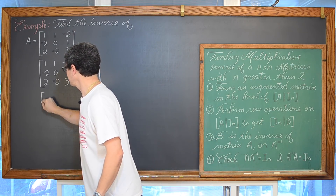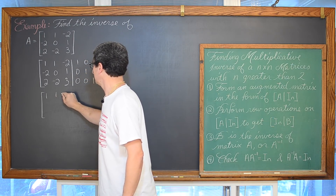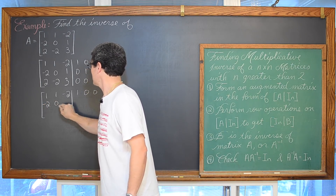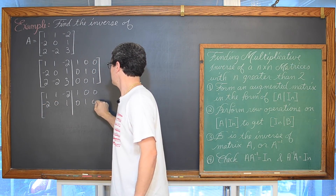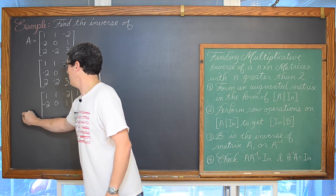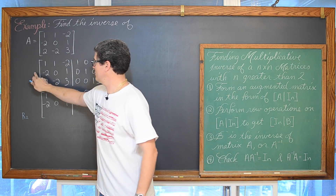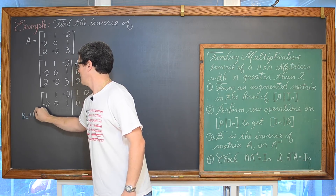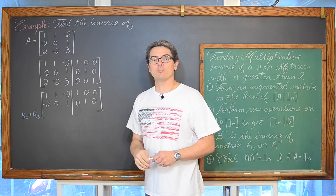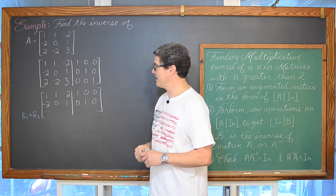I can see here that I have a negative two and a positive two. I am already set up to add row two with row three and get this first element in the third row to be equal to zero. So our next matrix has row one unchanged: 1, 1, negative 2, 1, 0, 0. Row two stays the same: negative 2, 0, 1, 0. I am going to take row two and add it with row three.